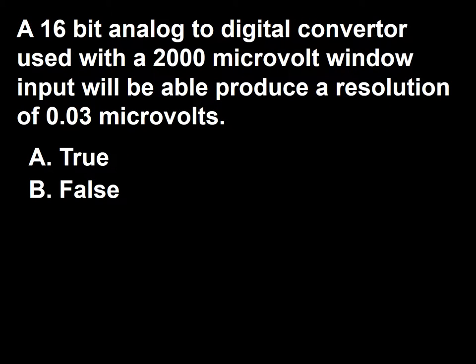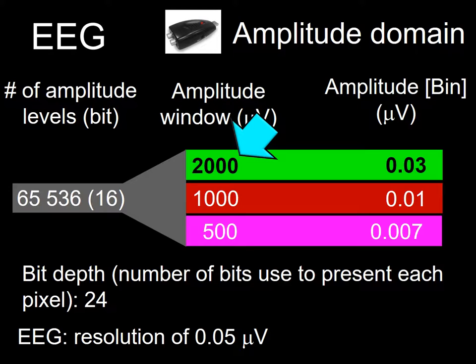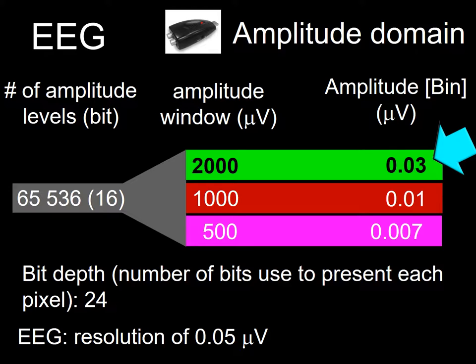Next question: A 16-bit analog-to-digital converter used with a 2,000-microvolt input window would be able to produce a resolution of 0.03 microvolts. A, true; B, false. Using 16-bit amplitude level resolution and a window of 2,000 microvolts, a change of 0.03 microvolts would always be registered. So the answer to this question is A, true.